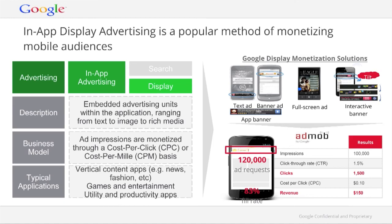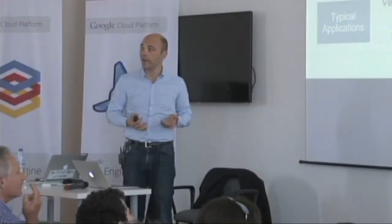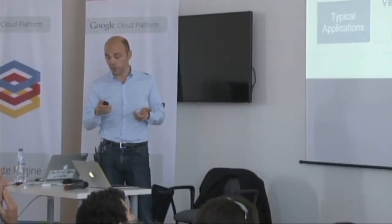To give you an example: if an app shows an ad 100,000 times with a click-through rate of 1.5%, that gives 1,500 clicks. At a cost of $0.10 per click, that brings $150 of revenue. If you're able to increase the number of impressions, or if you have multiple mobile or gaming applications, you can grow the revenue significantly.